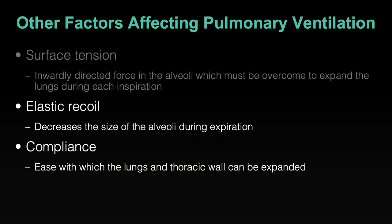In non-compliant lungs, shape doesn't change as readily in response to lifting of the thoracic cage or pulling down of the diaphragm. A non-compliant lung could be a situation where there's been scar tissue from some congenital defect or disease. Scarring and fibrosis from smoking decreases the compliance of lung tissue, making it harder and less flexible.